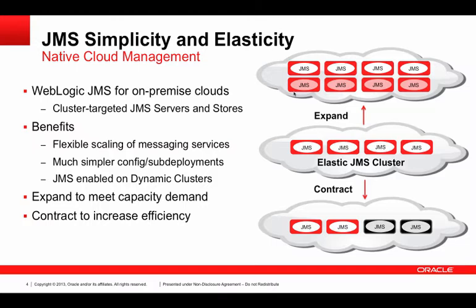The elastic JMS features that we added in WebLogic 12.1.2 go hand in glove with dynamic clusters. They enable much simpler cluster configuration in general, including much simpler sub-deployments. They enable simple, flexible scaling of the messaging infrastructure. And they make any use of JMS possible on dynamic clusters. Without these new features, JMS couldn't run on dynamic clusters.